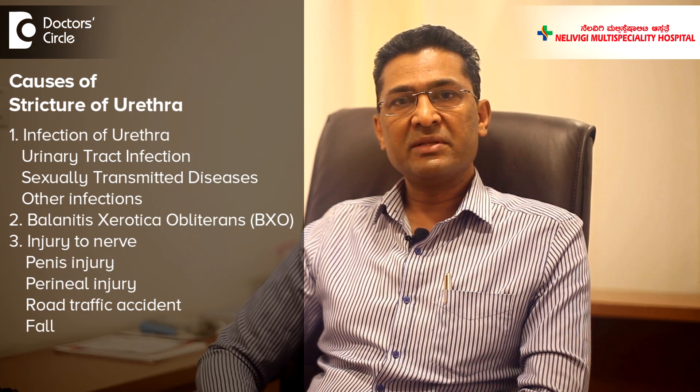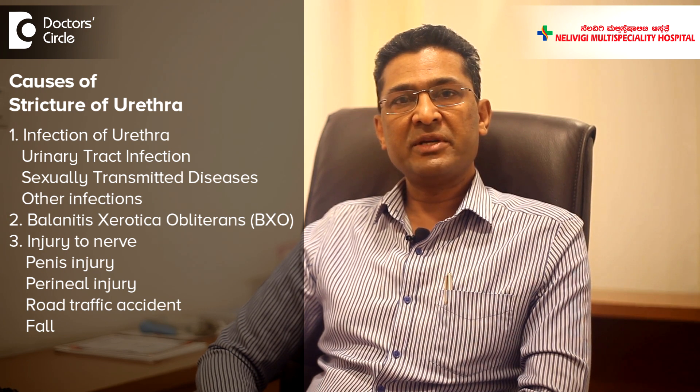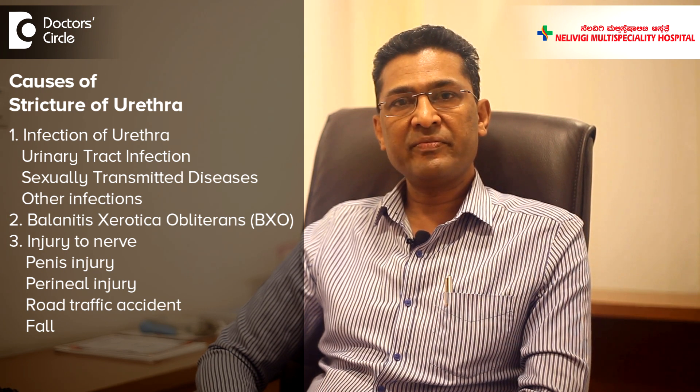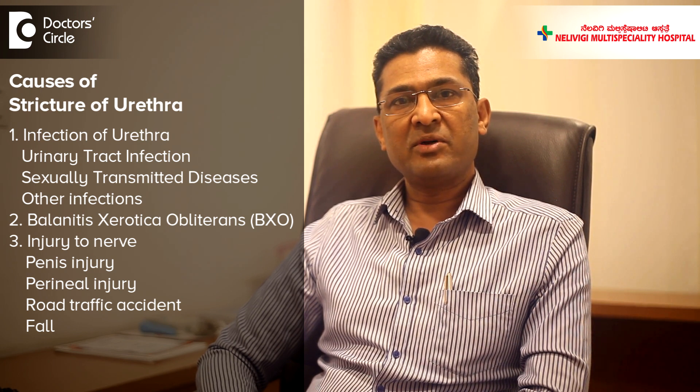What are the causes of stricture of the urethra? The most common cause in our country is infection of the urethra. Infection of the urethra could be because of urinary tract infection, sexually transmitted diseases, or some other infections. There are conditions like BXO, which is probably an autoimmune disease, which also results in stricture of the urethra. The other common condition which causes stricture of the urethra is injury to the urethra, which occurs whenever there is an injury to the penis or injury to the perineum either because of a road traffic accident or by fall.